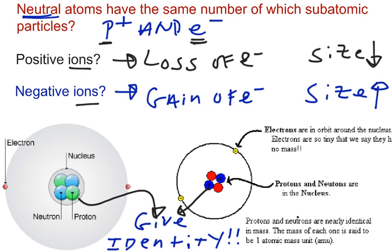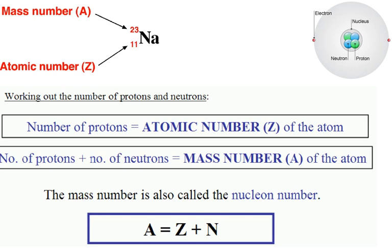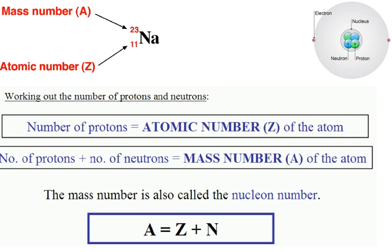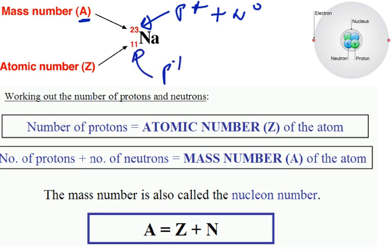Now we can move on to mass numbers and atomic numbers in relation to the atom, before counting the actual particles. The mass number — sometimes symbolized A in our textbooks — is made up of the protons and the neutrons, since electrons have no mass. The atomic number is the number of protons only, and it also has the symbol Z used in our textbooks.